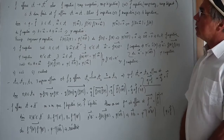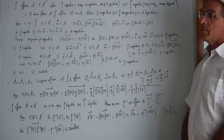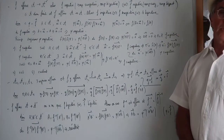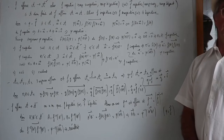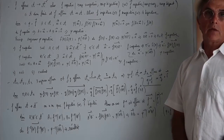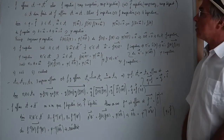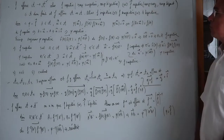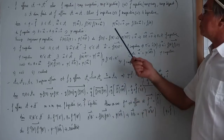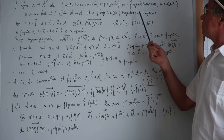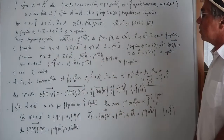Propriétés : si F est une application affine de l'espace affine A vers l'espace affine A', alors F est injective si et seulement si sa partie linéaire est injective ; elle est surjective si et seulement si sa partie linéaire est surjective ; elle est bijective si et seulement si sa partie linéaire est bijective. Si A est de dimension finie, alors F bijective équivaut à F surjective équivaut à F injective. Pour la démonstration, j'appelle Φ la partie linéaire de F.